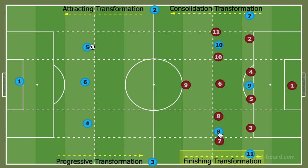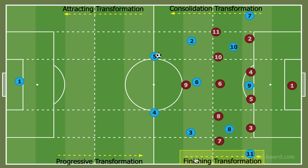Our wingers become wide and our previous double pivot will move higher into the half spaces. We'll play with two central defenders in either half space, and the roles of our full backs will become more narrow to maintain a tighter circulation and rest-defense structure. The goal of this phase is scoring goals, creating chances, and controlling play in the offensive half.